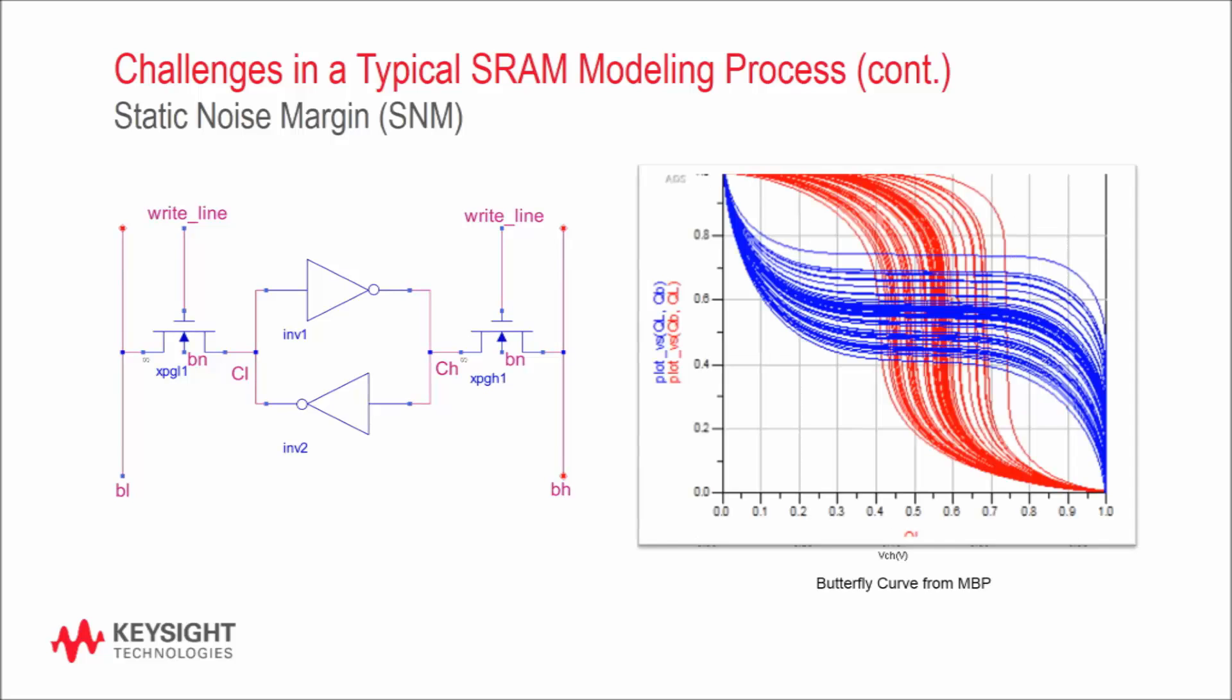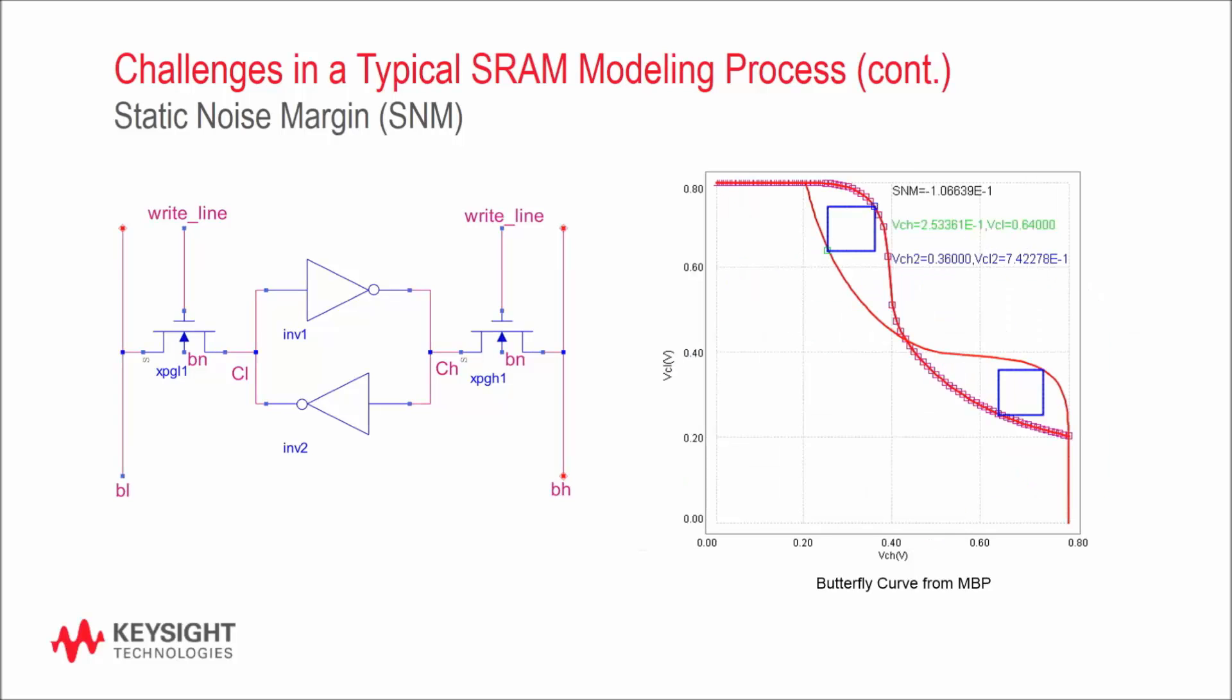Hypothetically, let's say that we have some external noise at CL and CH. How big do you think this noise can be before it threatens to change the state of the memory cell? Static noise margin captures this property and is commonly defined as the side of the largest square that can fit inside the butterfly curve's openings.